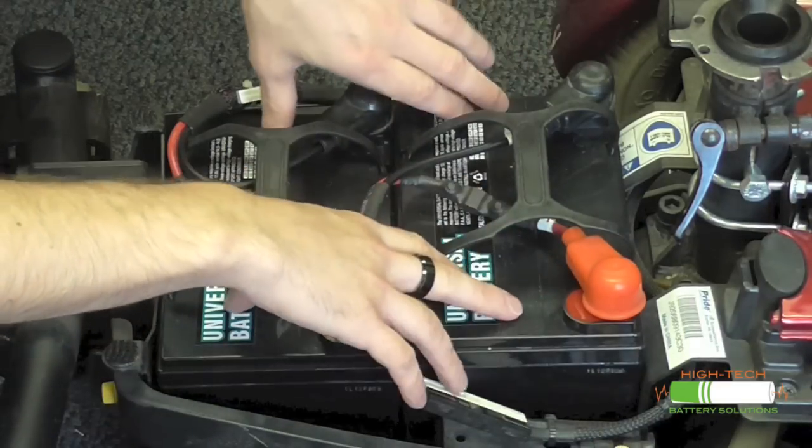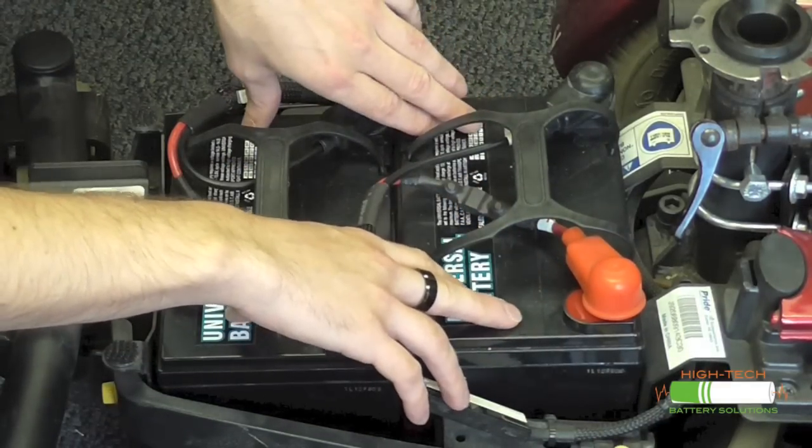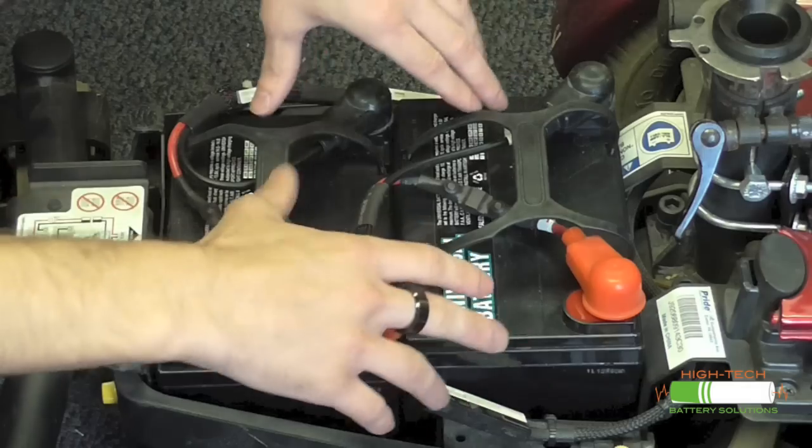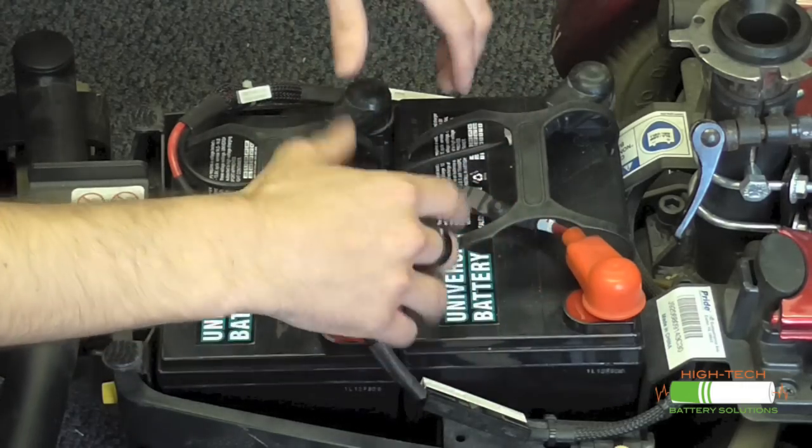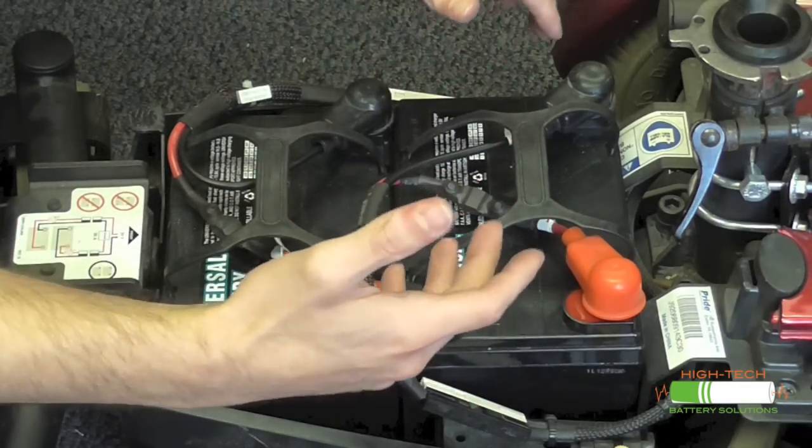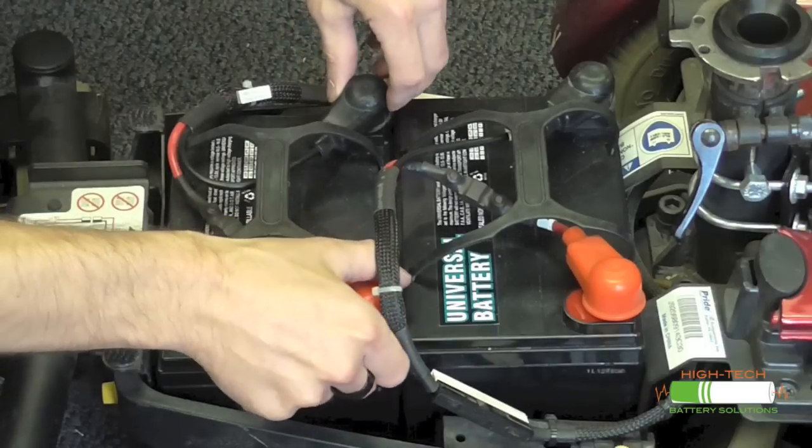The first thing the customer has requested that we do is test the batteries themselves to see if they're bad. Now according to him, he's just purchased the chair so it's already been sitting for an indefinite amount of time. So the first test we're going to do is check the voltage.